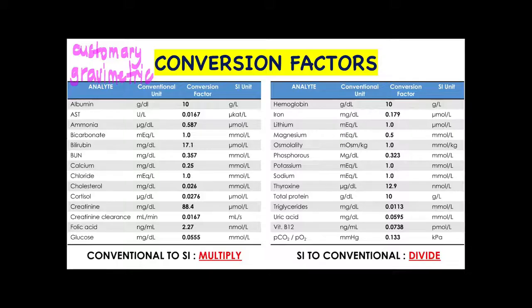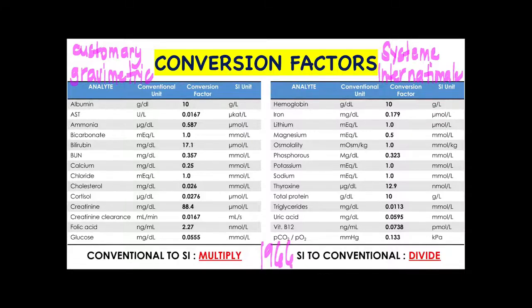For SI units, they are also known as the International System of Units, or sometimes referred to as the Système International. The SI unit is the modern form of the metric system and the world's most widely used system of measurement. It was in 1966 that the IFCC — the International Federation of Clinical Chemistry and Laboratory Medicine — recommended the use of selected SI units for clinical laboratory.